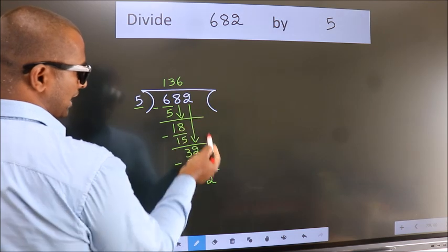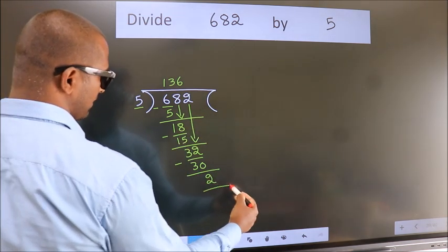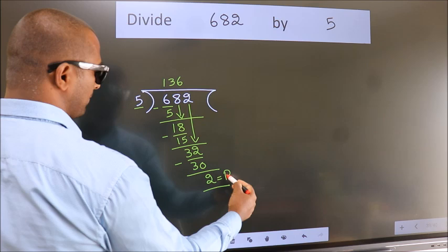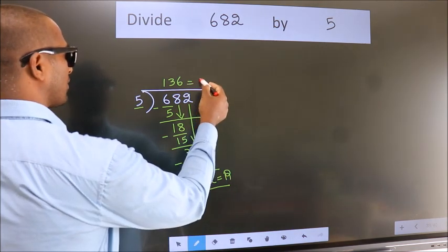No more numbers to bring down. So we stop here. This is our remainder. This is our quotient.